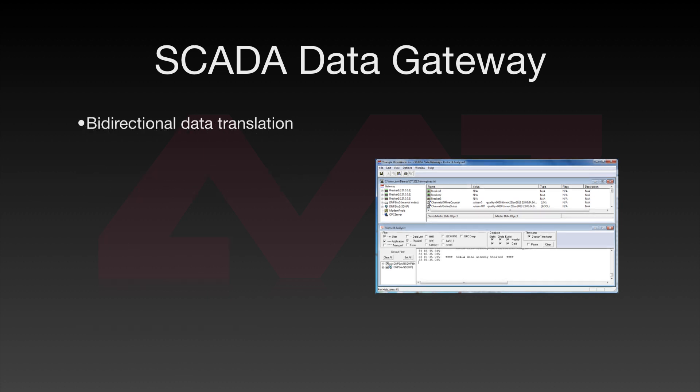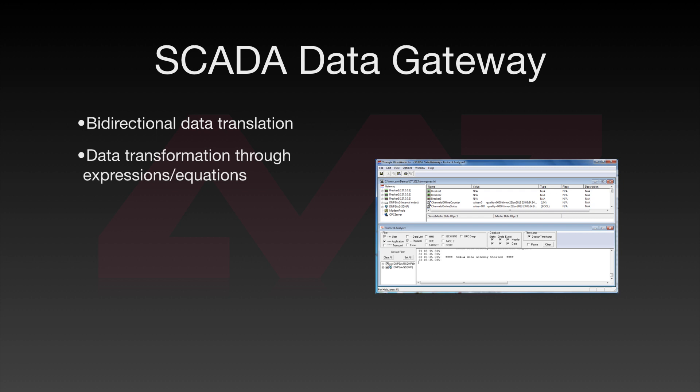The SCADA Data Gateway supports bi-directional data translation. For example, it can pass data from an outstation to a master as well as send commands from that master back to the outstation. It also supports expressions and equations to perform data transformation. For example, if a device reports integer values, the SCADA Data Gateway can scale those values and report them as floating point numbers in engineering units.